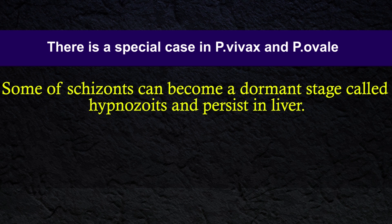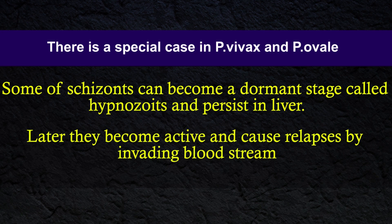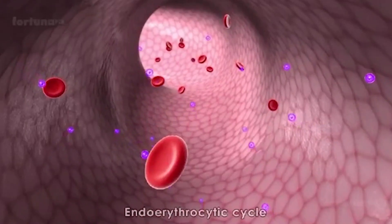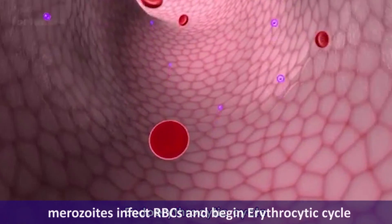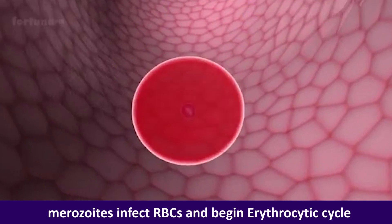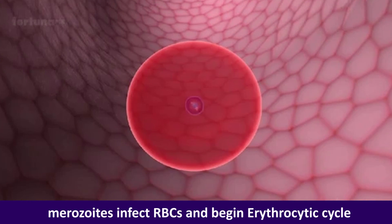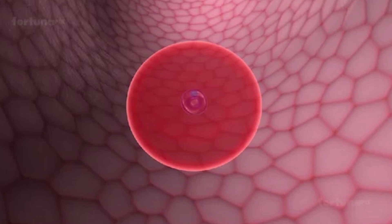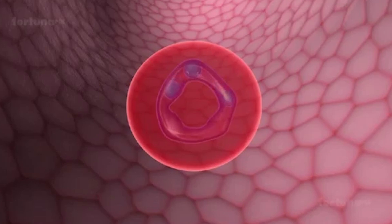Hypnocytes persist in the liver, and later they become activated and cause relapses by invading the bloodstream. After this liver psychogony, the muracytes infect red blood cells and begin the elitrocytic cycle. Muracytes become rim-shaped propocytes and then mature into psychogony within red blood cells.